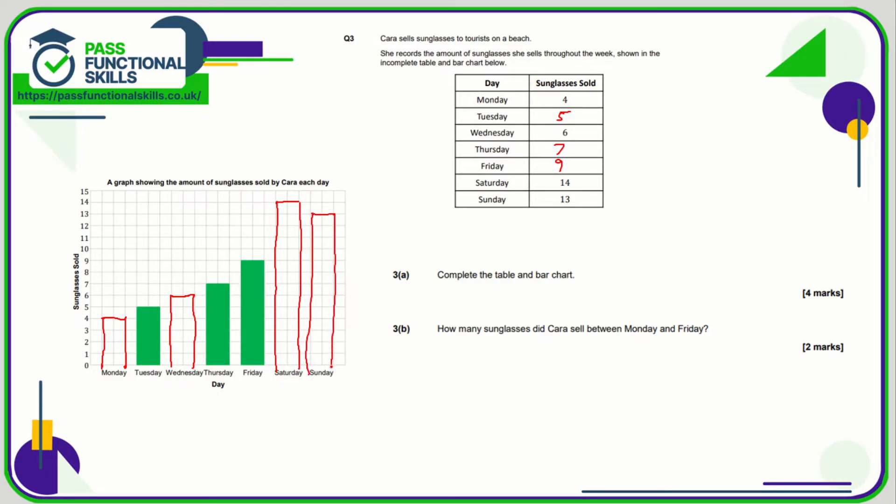And we're done. So most important thing is make sure all the bars are the same width and that they're not touching each other. And how many sunglasses did Cara sell between Monday and Friday? So we're not interested in Saturday and Sunday, so we're just adding these values up here. You can use the calculator, so that comes to 31 pairs of sunglasses.